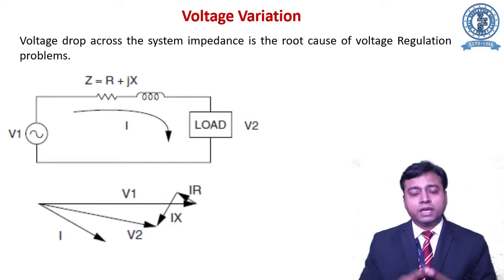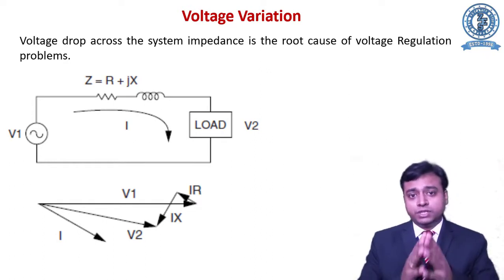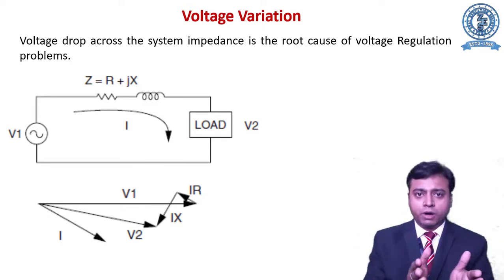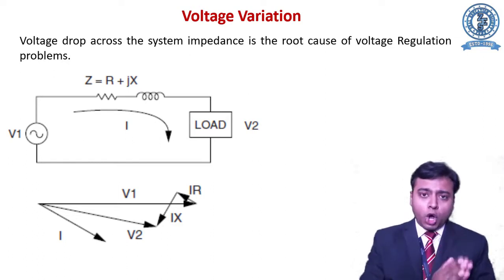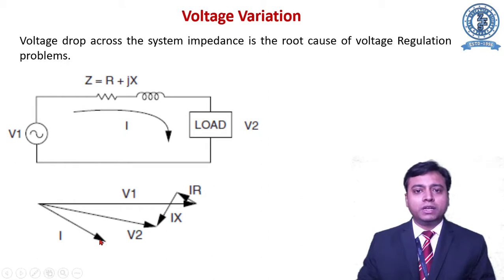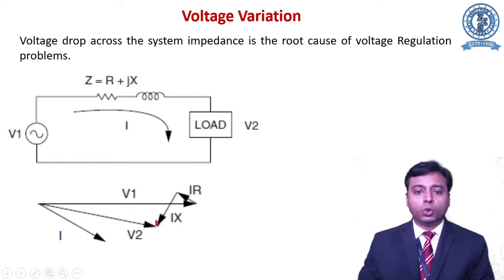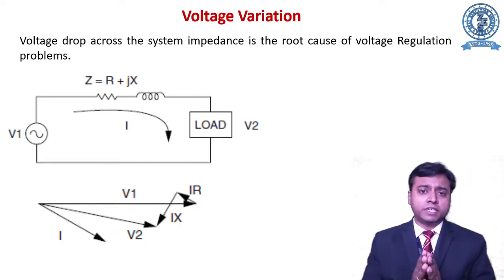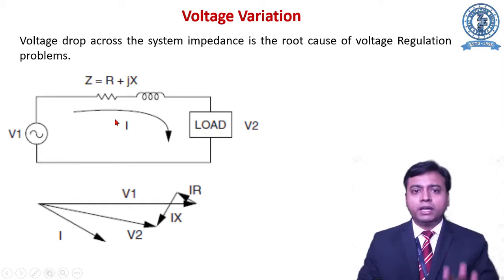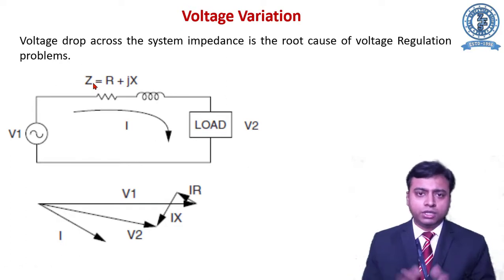Here R is the resistance and X is the impedance of the system. If there is a change in R or X, the overall impedance Z will change, causing a voltage drop, so V1 will not equal V2. This is clearly shown in the phasor diagram — you have a drop due to resistance (IR) and a drop due to impedance (IX), so the net voltage at the load is less than V1 and deviates at a certain angle. To regulate voltage, R and X must be regulated, which regulates Z and therefore the voltage.